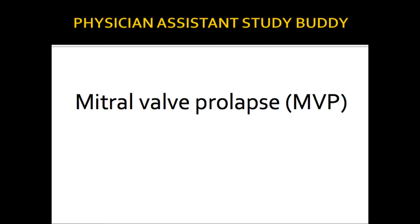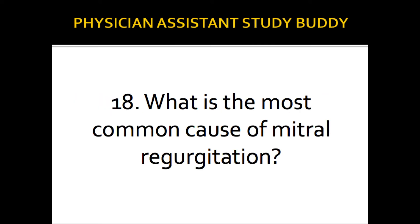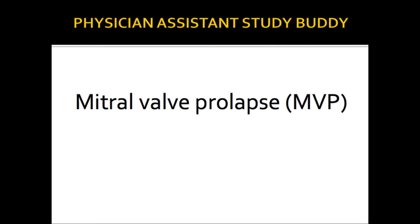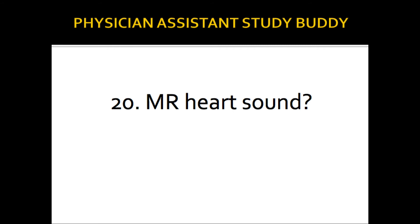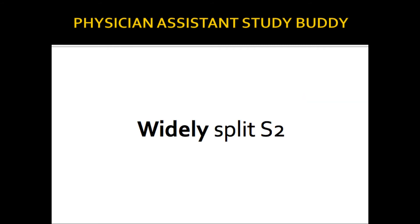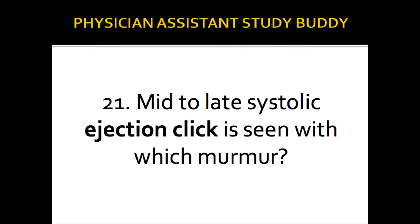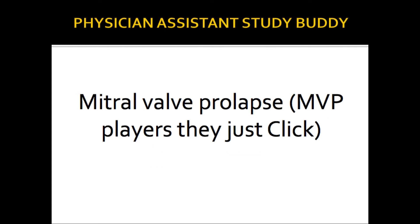The most common cause of mitral regurgitation is mitral valve prolapse — MVP causes MR. The mitral regurgitation murmur radiates to the axilla. Mitral regurgitation heart sound is a widely split S2. A mid-to-late systolic ejection click is seen with mitral valve prolapse — MVP players just click, so if the question mentions ejection click, look for MVP.